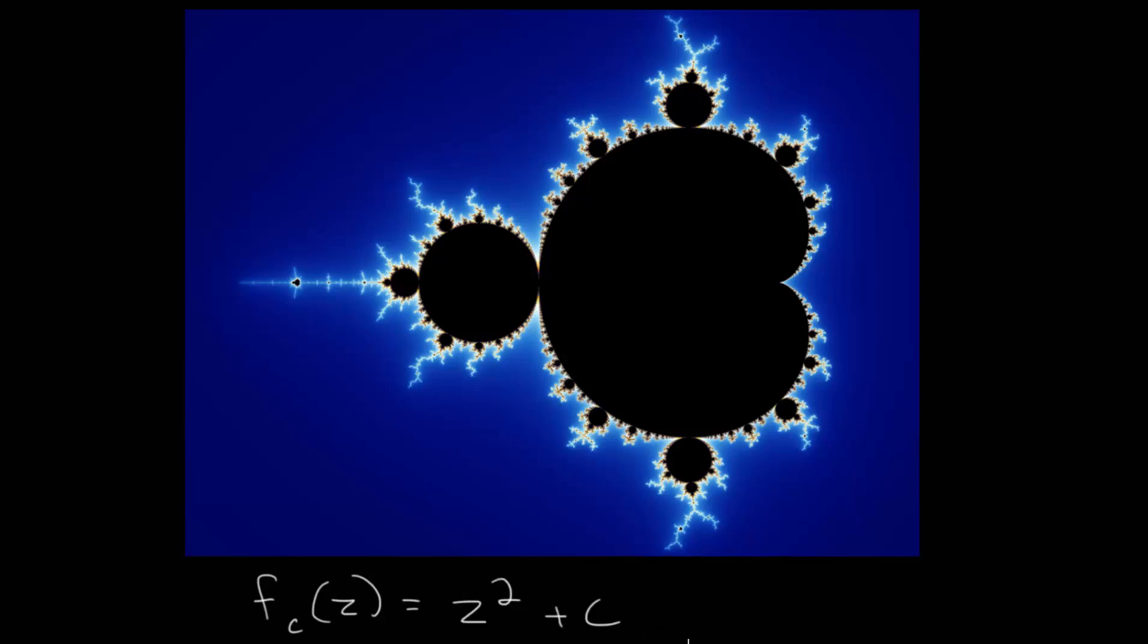And this is not a normal type of function. This is a function that carries out a process called iteration. We will essentially pick a point on this plane and plug it into this equation infinitely many times. And if the number approaches zero, we will color it black. And if the number approaches infinity, then we will give it some type of color.